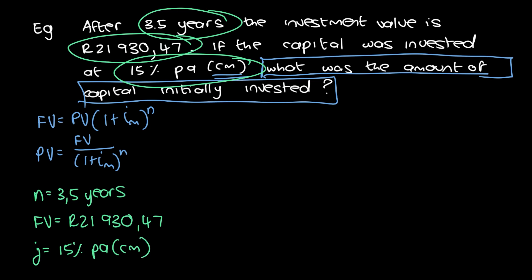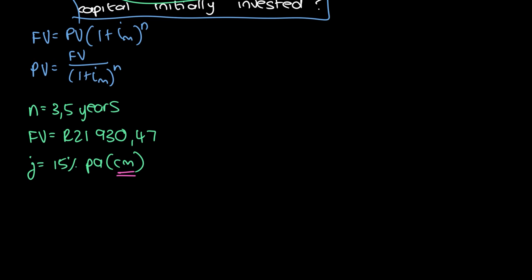So now we need to change the nominal interest to the effective interest because we use effective interest in our compound interest formula. So the effective interest is going to be, it's compounded monthly, so it's going to be i sub 12 that we're looking for.